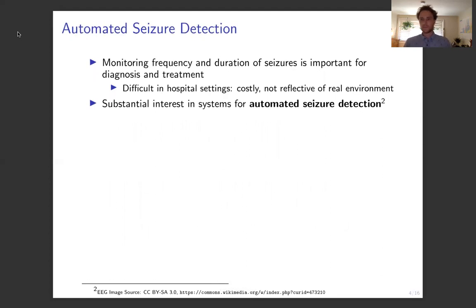When doctors are diagnosing epilepsy and deciding on treatment, an important component is monitoring the frequency and duration of seizures. This is typically done in hospital settings, but that's problematic because it requires costly stays and hospitals don't reflect the patient's true environment. Accordingly, there's been significant recent interest in developing systems for automated seizure detection — giving a patient a wearable device to take home that collects EEG recordings automatically in real time, with an algorithm that annotates the signal to determine where seizures occurred.